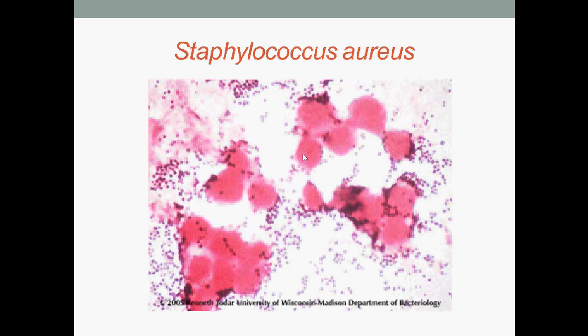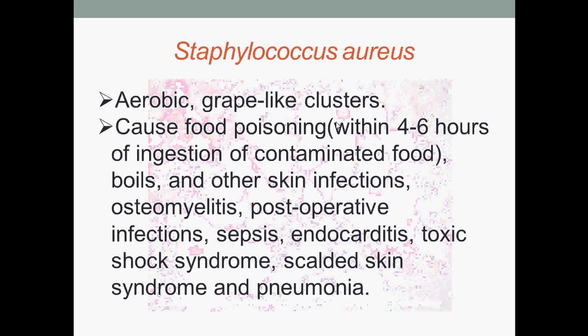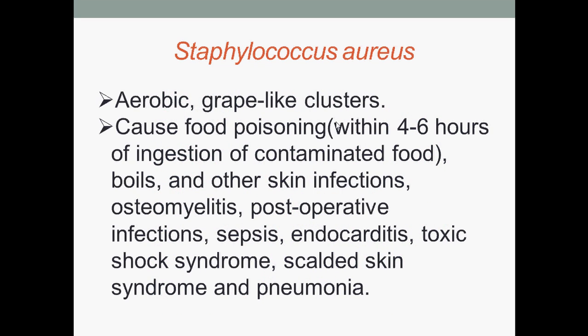Staphylococcus aureus under microscopic view. They are aerobic, meaning they require oxygen, and form grape-like clusters. Staphylococcus aureus causes food poisoning within 4 to 6 hours of ingestion of contaminated food, boils, and other skin infections, osteomyelitis, post-operative infections, nosocomial (hospital-acquired) infections, sepsis, endocarditis, toxic shock syndrome, scalded skin syndrome, and pneumonia.